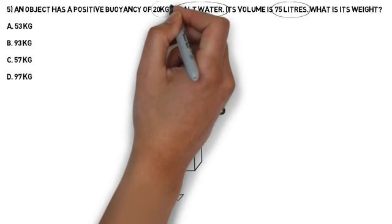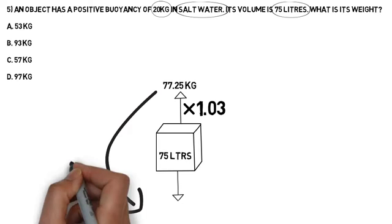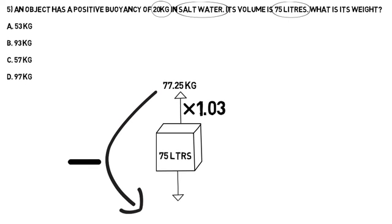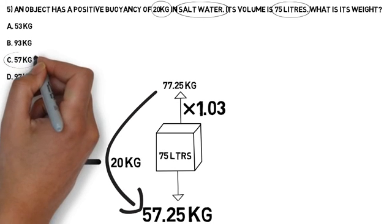What other information are we given? Well, we're told it's 20 kilograms positive. If it's 20 kilograms positive, that means that the downward force is 20 kilograms less than the upward force. So 77.25 minus 20 is 57.25. Answer C is the correct answer.